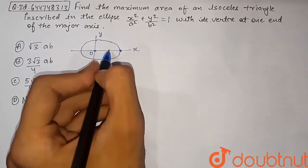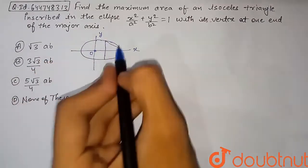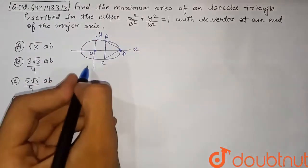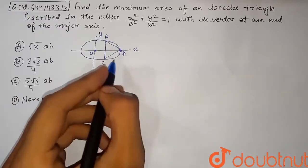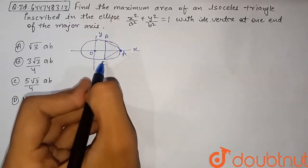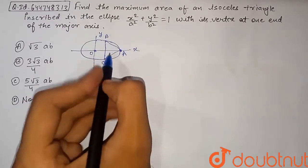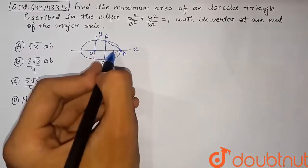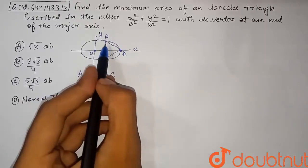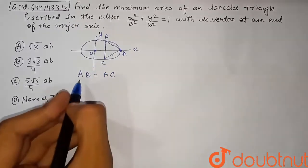Since an isosceles triangle has equal sides, by symmetry the two equal vertices B and C form the base. Joining these points gives triangle ABC. The line BC is perpendicular to the x-axis (parallel to the y-axis), because AB = AC by the isosceles property, so the base BC is parallel to the y-axis due to symmetry.